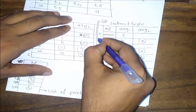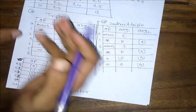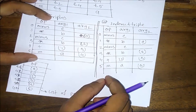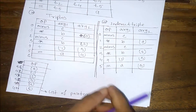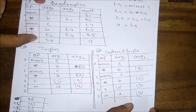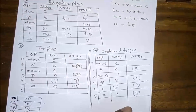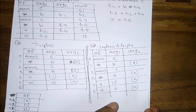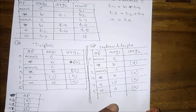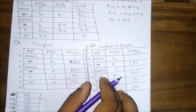We have covered three-address code, quadruples, triples, and indirect triples. If you found this tutorial helpful, please subscribe to our channel, like the video, and thank you for watching.